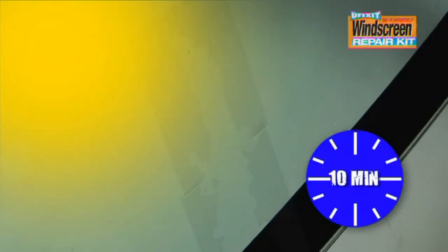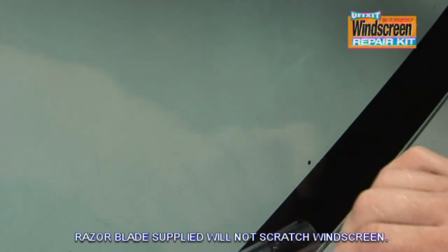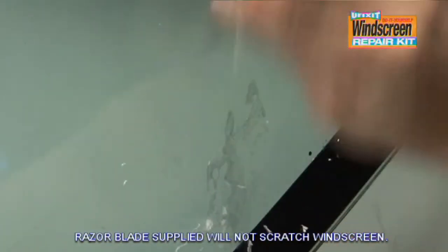Then expose to direct sunlight for 10 minutes. Remove the curing strip and scrape away the hardened excess resin with the razor blade provided. Your permanent repair is now complete.